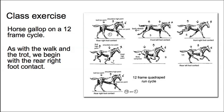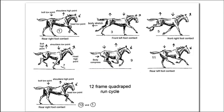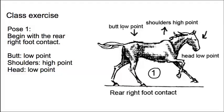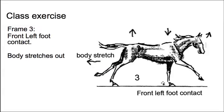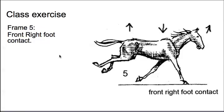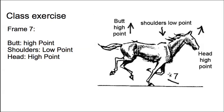Back to our 12-frame cycle, starting with the rear right foot contact. We begin with pose one — rear right foot contact, low point on the hindquarters, high point on the shoulders. At frame three, front left foot contact, body stretching out. Front right foot contact at frame five. Frame seven, the shoulders are at their low point and the hindquarters at the high point. The head is also at the high point, since the head and hindquarters act in unison in opposition to the shoulders.